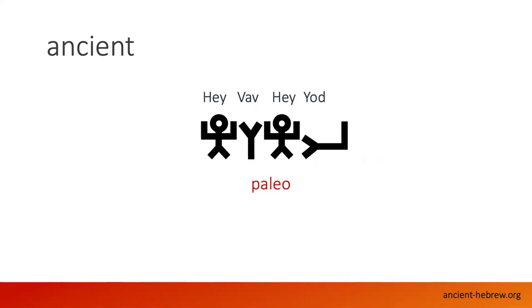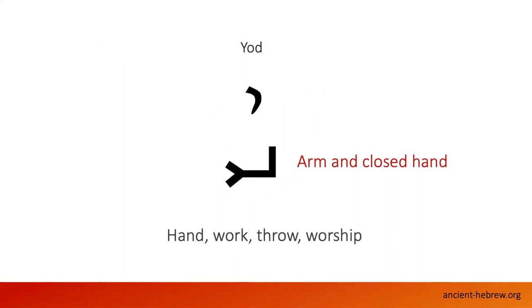So let's break it down. The first letter: the Yod, the Y. When you look at that, what does it look like? It's an arm and a closed hand. And so the meaning of that letter is that you're going to work, or throw something, or that you're worshipping. The actual letter itself has meaning — the letter itself has a picture. That's how deep the Father's language is that he gave us.